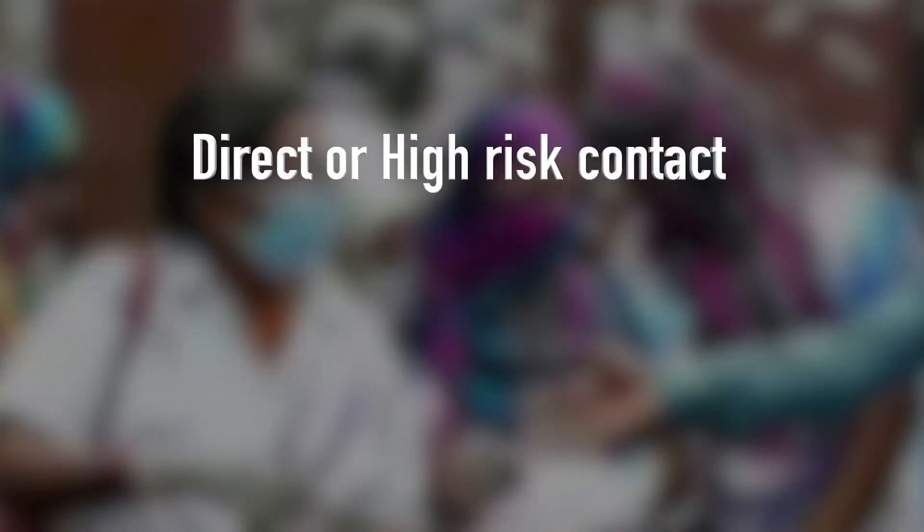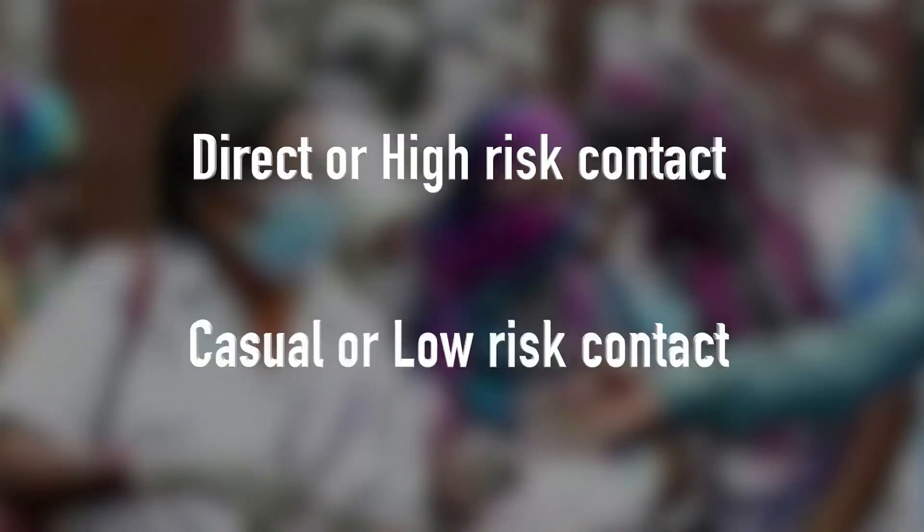One positive case will have around 200 to 300 contacts. Tracking the right number is more important than tracking the big number. Contacts are of two types: direct or high risk contact, and casual or low risk contact.